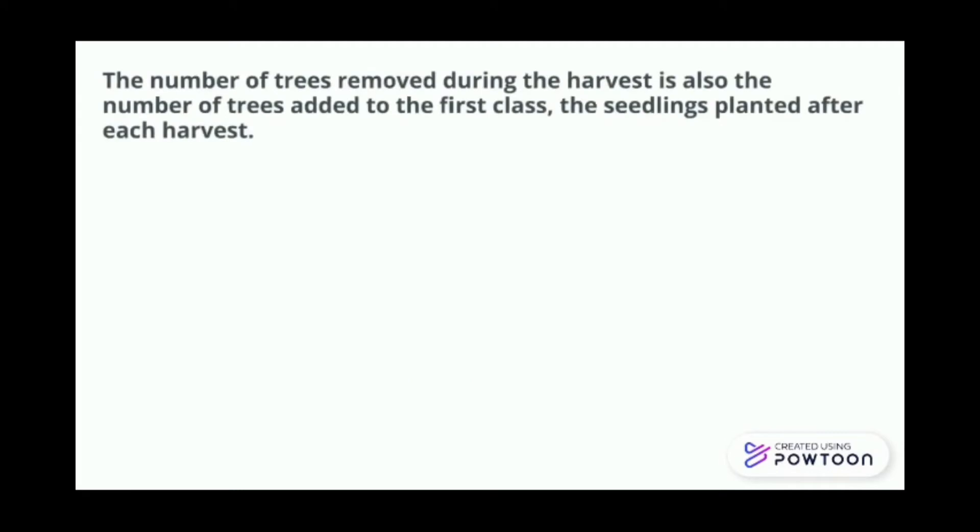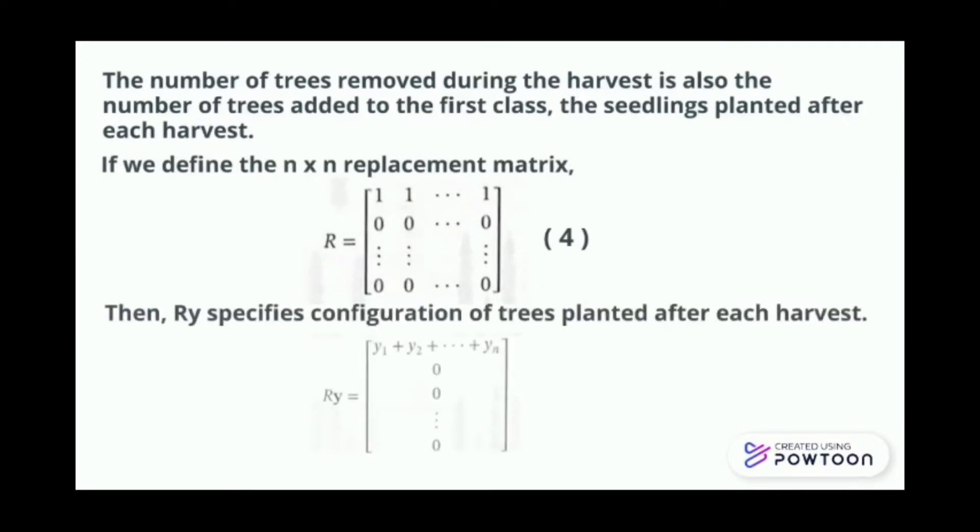The number of trees removed during the harvest is also the number of trees added to the first class, the seedlings planted after each harvest. If we define n times n replacement matrix, we label this as equation 4. Then Ry specifies the configuration of trees planted after each harvest. We label this as equation 5.